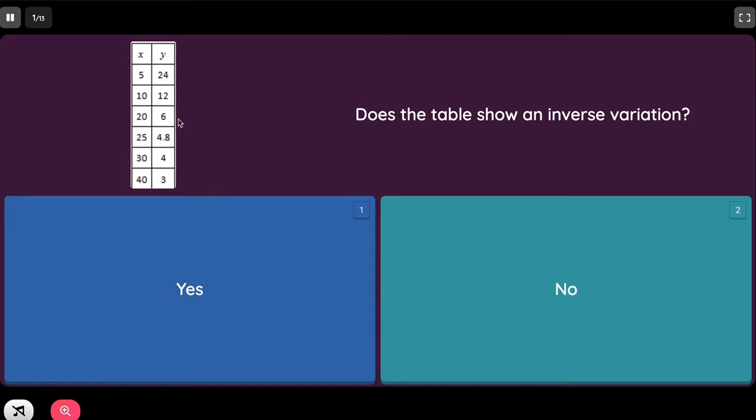20 times 6 equals 120, and going on. If you'll get the answers all the same, for example all of them are 120, it is going to be an inverse variation. So the answer is yes.